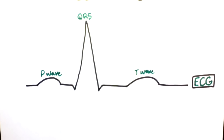The P wave refers to the depolarization of the atria, the QRS complex refers to the depolarization of the ventricle, and the T wave refers to the repolarization of the ventricle. The repolarization of the atria is not seen because it is hidden by the QRS complex.